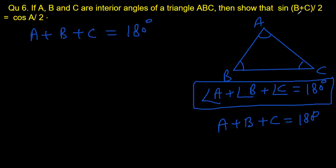And then here we are talking about B plus C by 2 and A by 2. Can we divide both sides of this equation by 2? Well, we can. So what we are going to do is A by 2 plus B by 2, every term divided by 2, is equal to 180 by 2 would be 90.